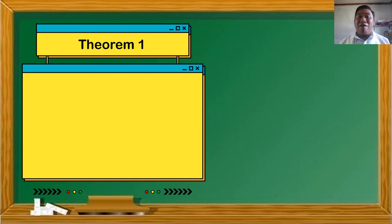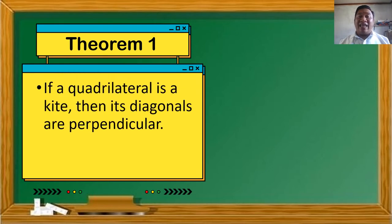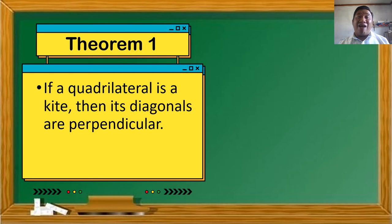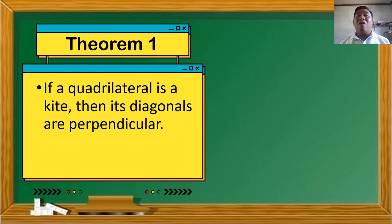Let's have Theorem Number 1. If a quadrilateral is a kite, then its diagonals are perpendicular. This theorem says that if a quadrilateral is a kite, then its diagonals are perpendicular. Perpendicular means the diagonals intersect and form a right angle.